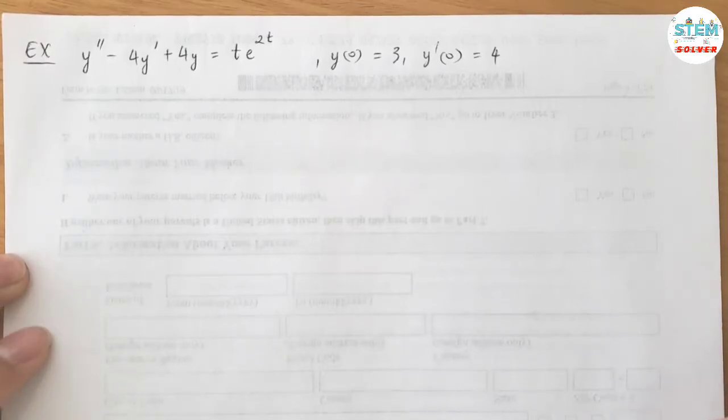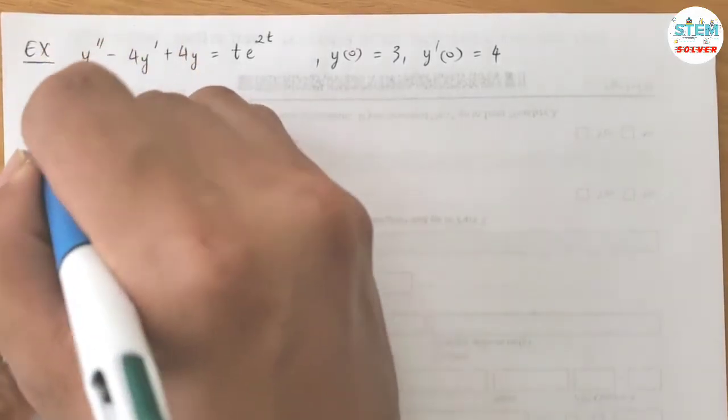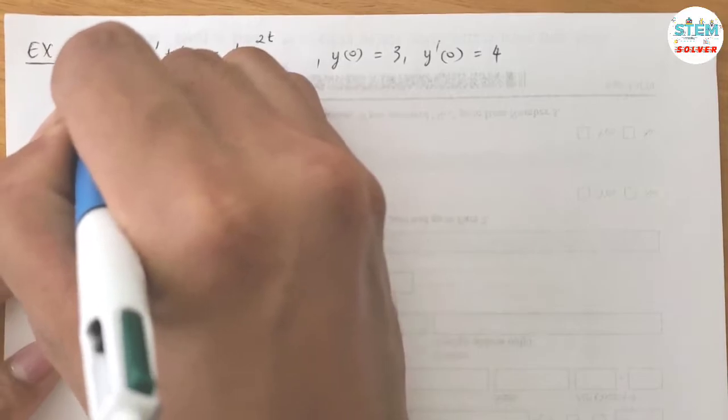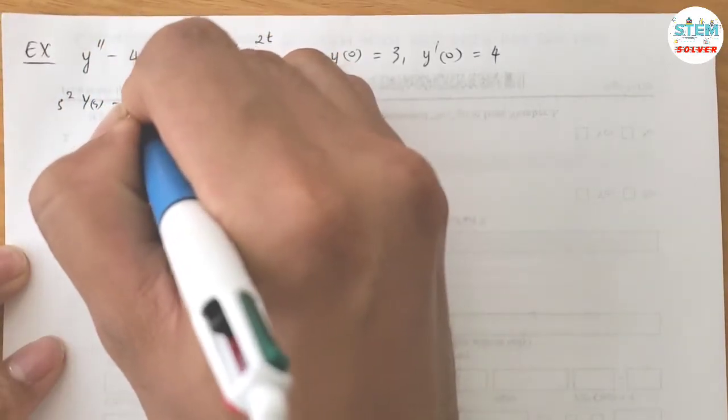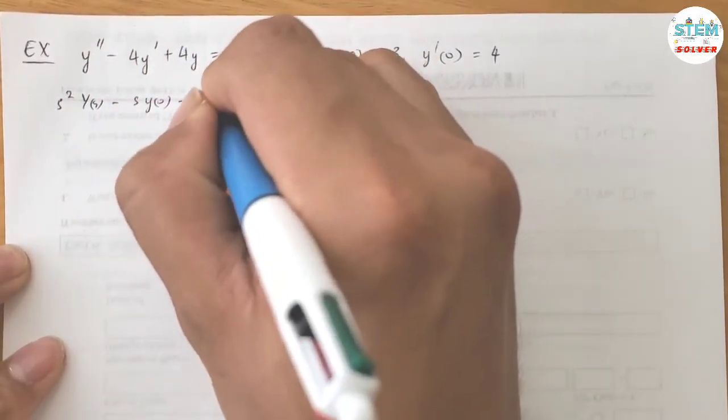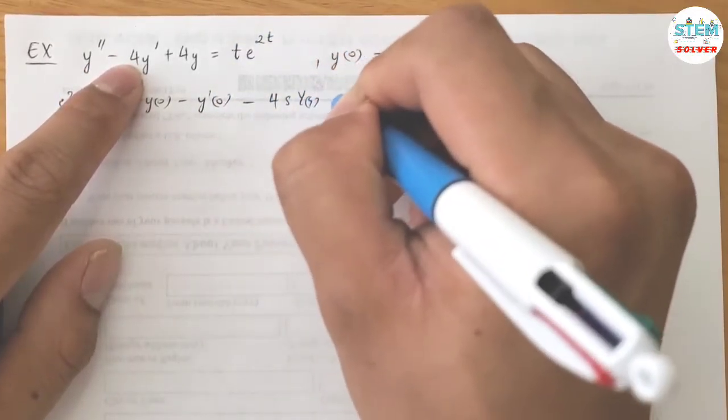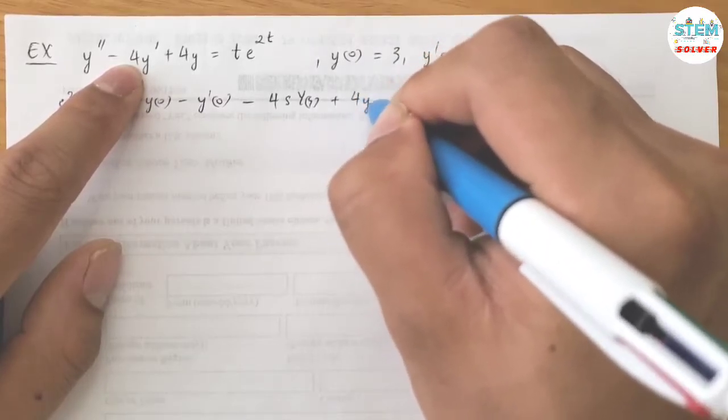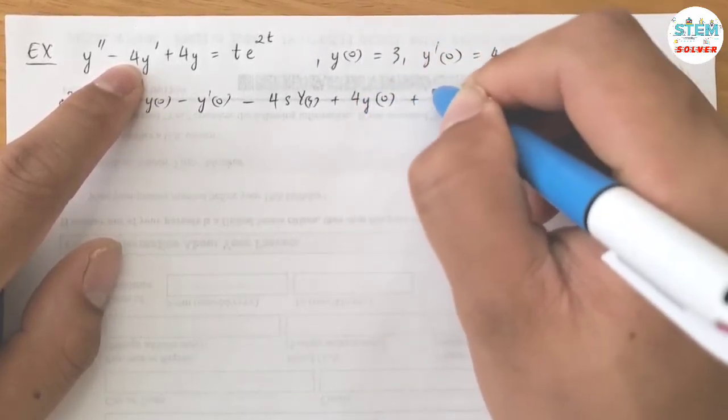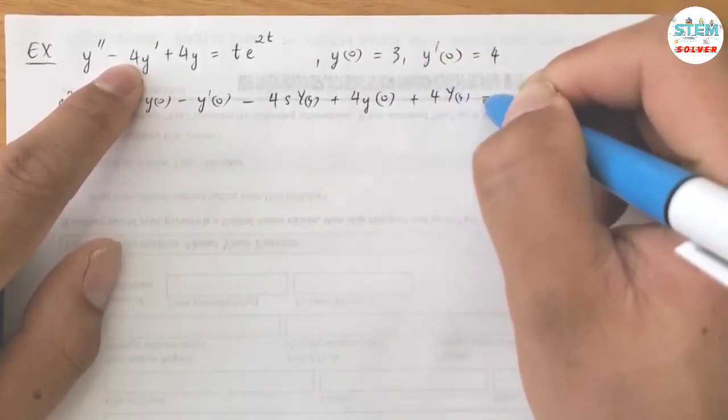So first of all, apply the derivative theorem on both sides. We have S squared capital Y of S minus S times Y of 0 minus Y prime of 0, minus 4S capital Y of S plus 4 times Y of 0, plus 4 capital Y of S equals...